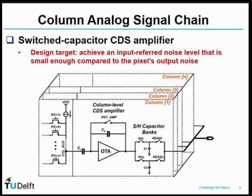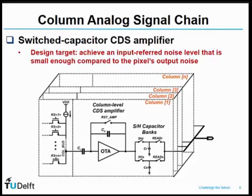Another part of the noise contribution comes from the column analog signal chain. We typically use the switched-capacitor CDS amplifier as the analog signal chain. This CDS amplifier both amplifies the pixel signal and performs correlated double sampling to cancel KT/C noise and reduce flicker noise.